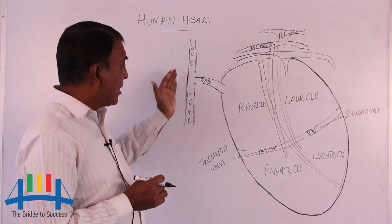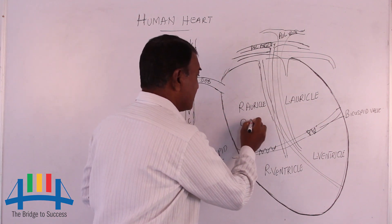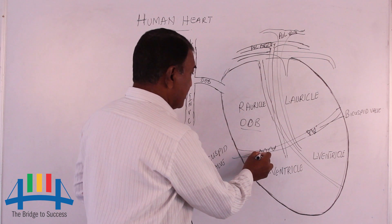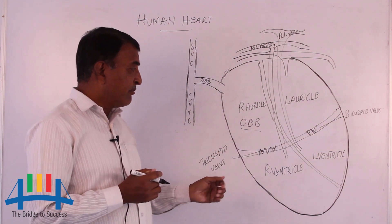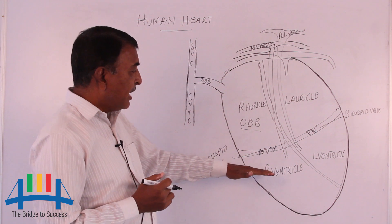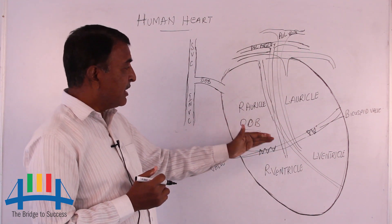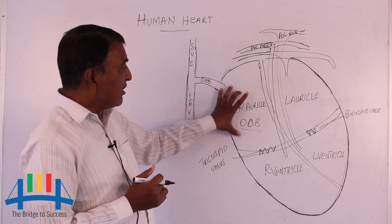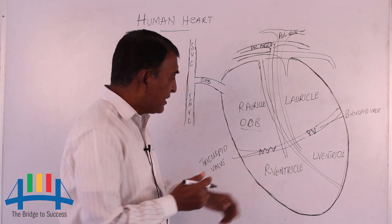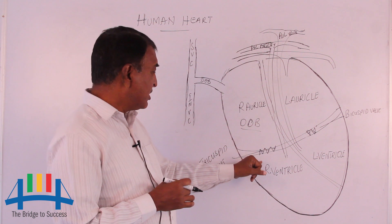As the superior vena cava and inferior vena cava collect the deoxygenated blood, the right auricle also collects deoxygenated blood. As soon as the deoxygenated blood enters into the right auricle, we can see the tricuspid valve. The main role of the tricuspid valve is to allow blood in only one direction — it prevents blood from flowing back from the ventricle to the auricle. Through this valve, the deoxygenated blood enters the right ventricle.